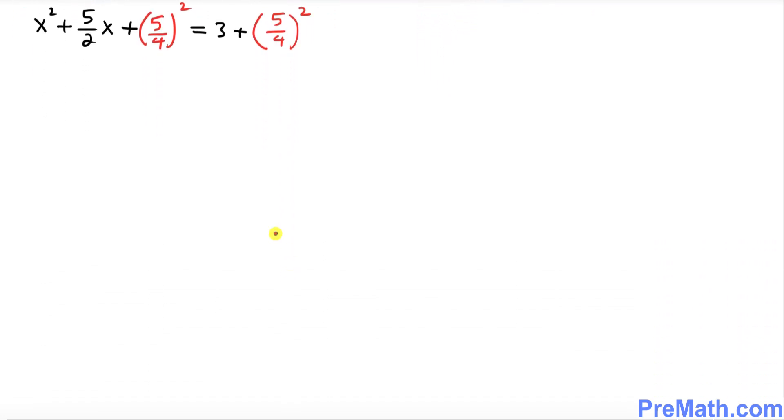Now look at the left hand side. This represents a complete square which is (x + 5/4)² = 3 + (5/4)², which is 25/16. 3 could be written as 3/1.